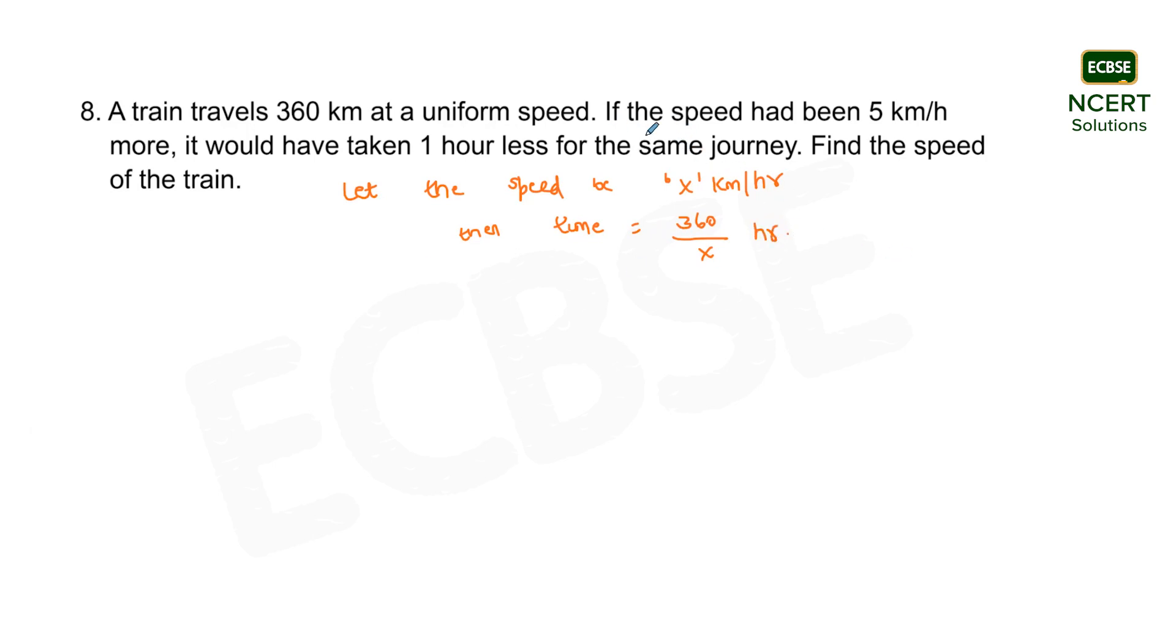It's also been given that if the speed had been 5 km per hour more, means now we have increased the speed by 5. That is, earlier it was x km per hour, now it's x plus 5 km per hour. So this is the speed of the train now.